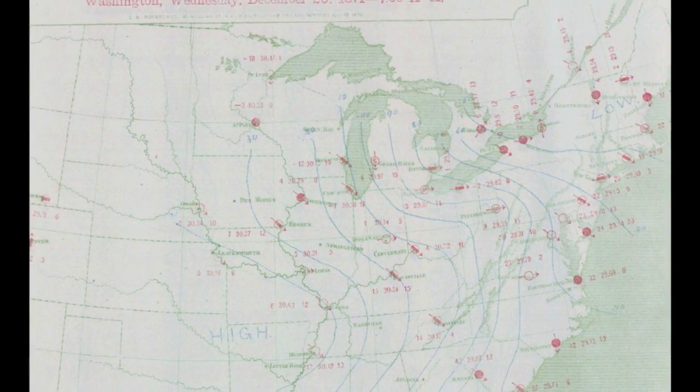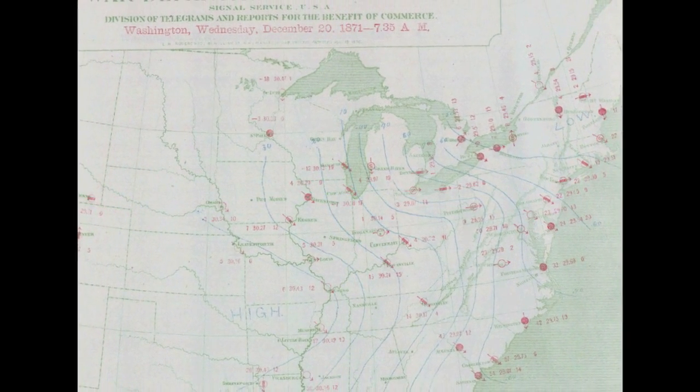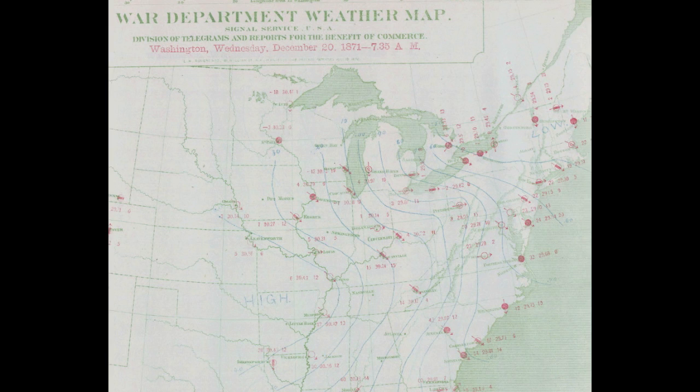These maps contained information on wind, weather, sky cover, temperature, and air pressure. Analysis of the maps for pressure revealed the highs and lows that we still use today.